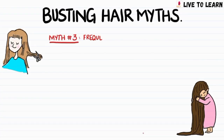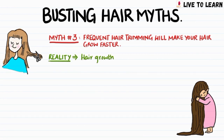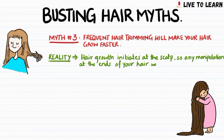Moving on to the third myth: more frequent hair trimming will make your hair grow faster. This is incorrect. Hair growth initiates at the scalp, so any manipulation at the ends of your hair is going to have zero effect on the speed of hair growth.